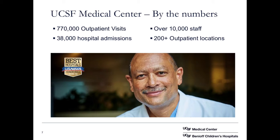UCSF by the numbers: annually we have about 770,000 outpatient visits, including 38,000 hospital admissions for our primary hospital sites and over 10,000 staff that support the medical center. In addition to our three primary campus sites, we have over 200 outpatient locations spread throughout the San Francisco area, across the bay, and serving the Central Valley region of California. We also have about 1,800 babies born annually at our UCSF locations.